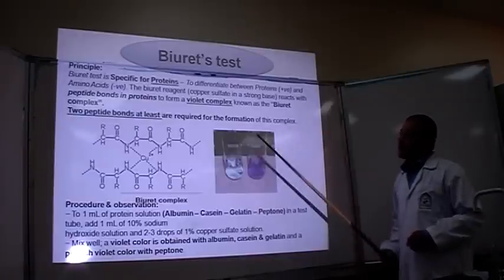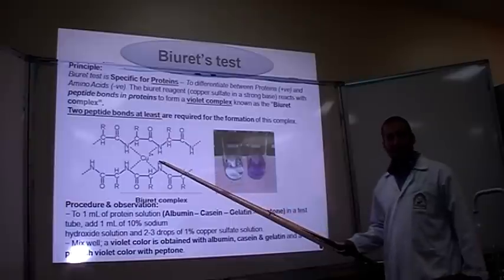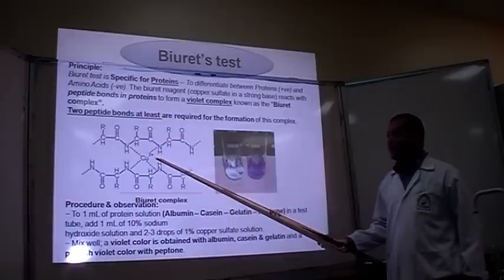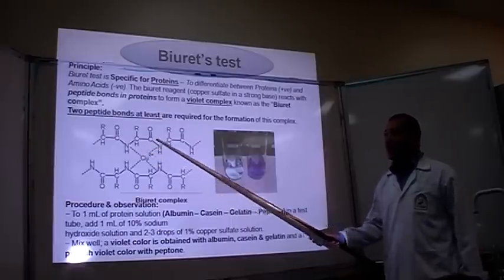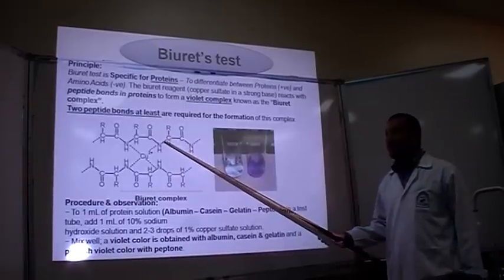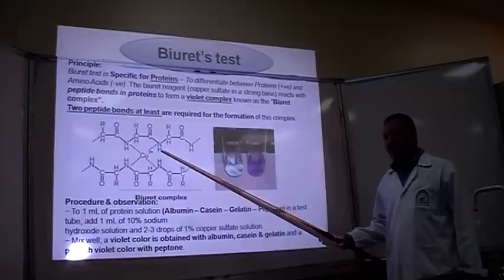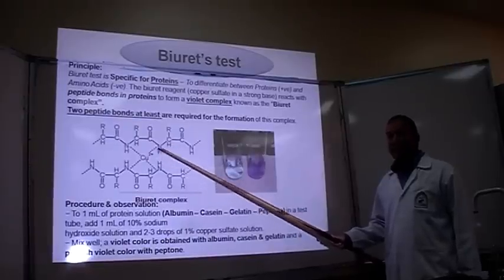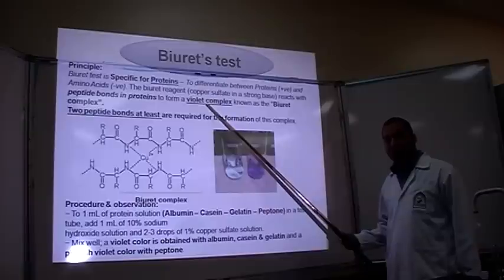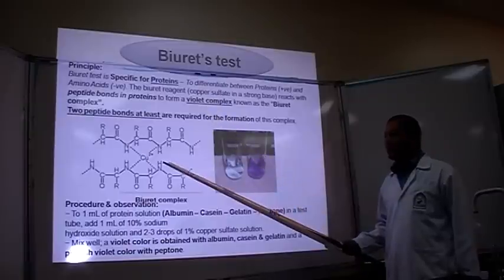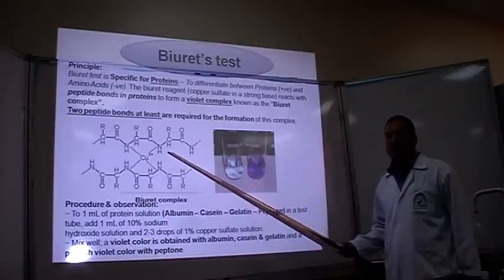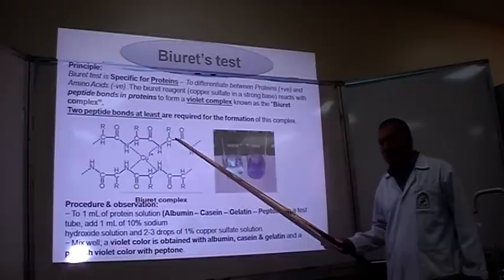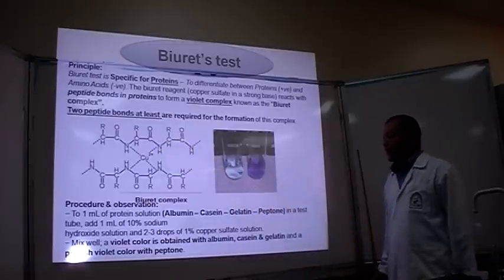Copper sulfate in an alkaline medium can form a complex with the peptide bonds of proteins. This is why all proteins give a positive result — a violet complex — while amino acids give a negative result, because amino acids don't have peptide bonds.